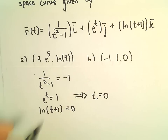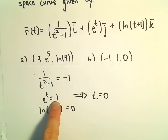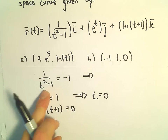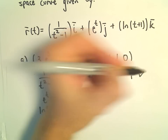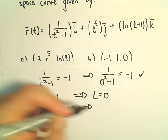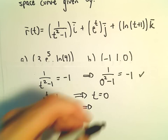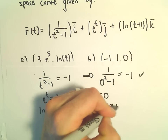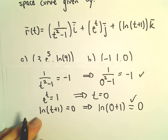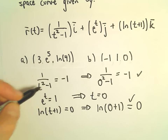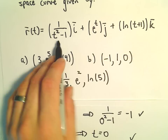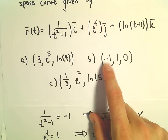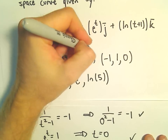I'll look at the second equation since that's easiest. Notice if you plug in t equals 0, e to the 0 equals 1. If we plug t equals 0 into the first equation, we get 1 over 0 squared minus 1, and that does equal negative 1. Likewise, plugging t equals 0 into the bottom equation gives the natural logarithm of 0 plus 1, which is ln 1, and that equals 0. So when t equals 0, plugging into our vector-valued function gives us the point (-1, 1, 0). So this definitely works.